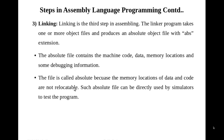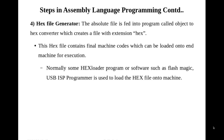The absolute file contains fixed memory locations which cannot be changed — it cannot be relocated and cannot be directly uploaded onto an 8051 machine. To convert this absolute file to machine code in hex, we need a program called the object to hex converter. The absolute file is fed to this program, which creates a file with .hex extension. This hex file contains the final machine codes which can be loaded onto the target machine for execution. Programs such as FlashMagic, USB ISP programmer, and ProgISP can be used to load the hex file onto the target machine.